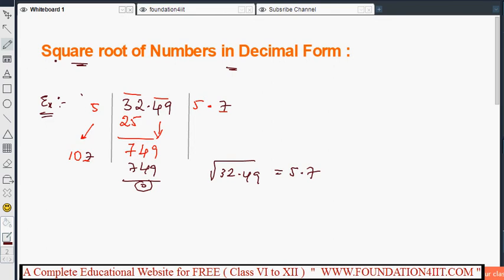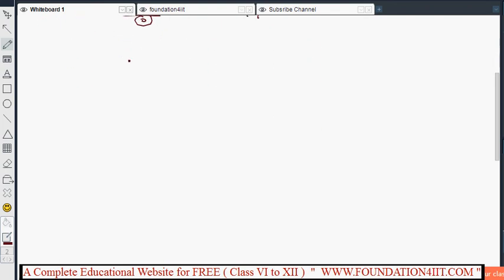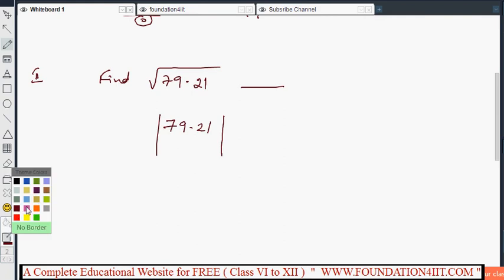Let us see one more example. Find the square root of 79.21. So this value we need to find out. 79.21. Now take the pair 21. Because after the point it is an even number of digits, there are two digits after the point. 2 is an even number.